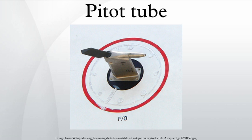Theory of operation: The basic Pitot tube consists of a tube pointing directly into the fluid flow. As this tube contains fluid, a pressure can be measured. The moving fluid is brought to rest as there is no outlet to allow flow to continue. This pressure is the stagnation pressure of the fluid, also known as the total pressure or the Pitot pressure.